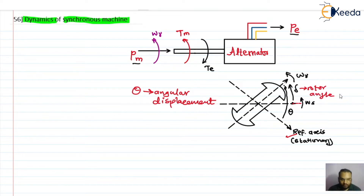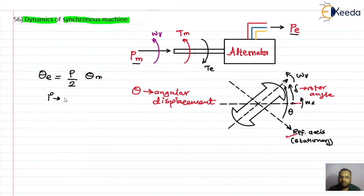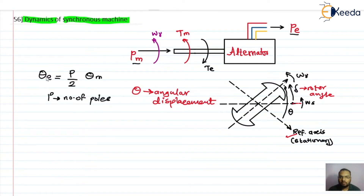This theta can be measured either in electrical degrees or in mechanical degrees. The relationship between theta electrical and theta mechanical is: theta electrical equals (P/2) times theta mechanical, where P is the number of poles. For a 2-pole machine the electrical angle equals the mechanical angle, but for a 4-pole or 6-pole machine the angles differ and we use this relationship.